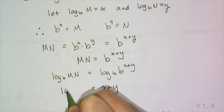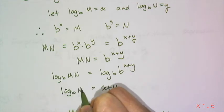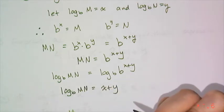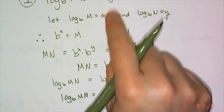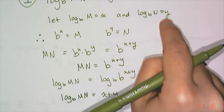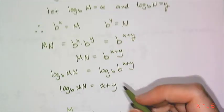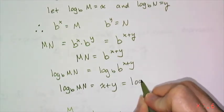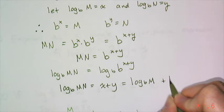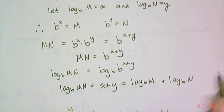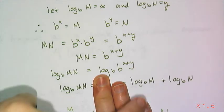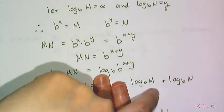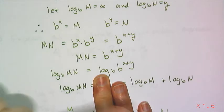So I have log base b of the quantity mn is equal to x plus y. So now I go back and I remember what x was and what y was. And those are log base b of m plus log base b of n. So I have proven by substitution that log base b of m times n is log base b of m plus log base b of n.